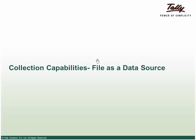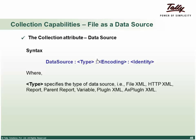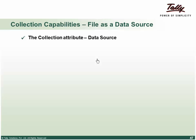We can also use the Data Source file capability using the 'Data Source' attribute. It accepts multiple types: File XML, HTTP XML, Report, Parent Report, Variable, Plugin XML, and EX Plugin XML. Identity can be a file path or DLL source. Encoding can be ASCII or Unicode — applicable only for File XML and HTTP XML. We will focus on the XML types in this session.